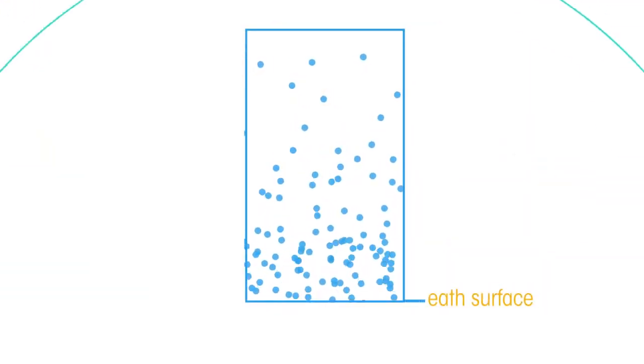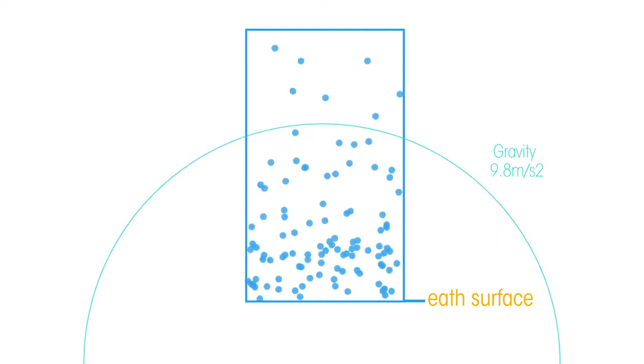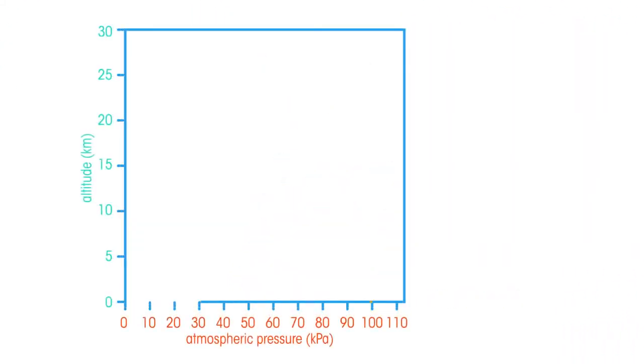Most of the atmosphere's molecules are close to the Earth's surface, thanks to gravity. And so the air pressure decreases rapidly at first as we increase altitude, and then more slowly at higher levels.